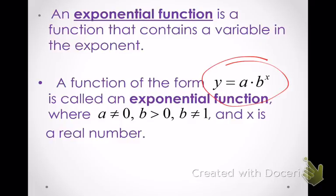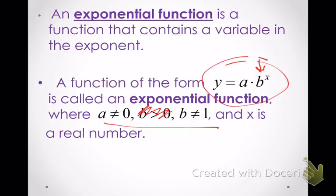There are some limitations. In an exponential function, a cannot be 0 — if it were 0, anything times 0 is 0 and the exponent would go away. So a can't be 0. B can't be 1 either, because 1 to any power stays 1, and we'd lose the exponential characteristic. B also has to be greater than 0. And x needs to be a real number — that's the only type of number we'd be plugging in anyway.